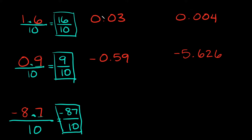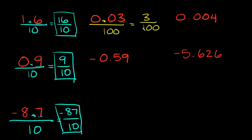Next example: 0.03. Draw a line underneath the whole thing, then figure out what place value it ends in. This is the tenths, this is the hundredths — so it ends in the hundredths. So I'm going to put a 100 in my denominator. All I have to do is drop the decimal, so up here I'm going to have just 3, and then 100 in the denominator. So 0.03 as a fraction would simply be 3 over 100.